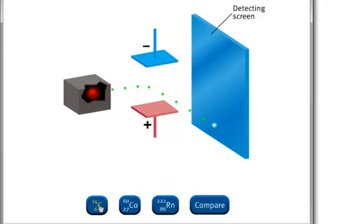Carbon-14 spontaneously emits beta particles from its nuclei. Since beta particles are attracted to the positive plate of an applied electric field, they must be negatively charged.